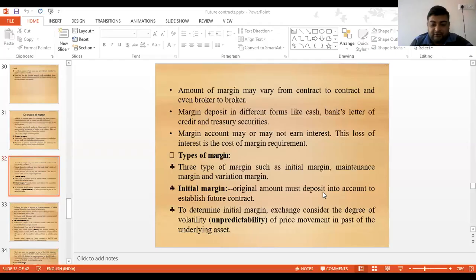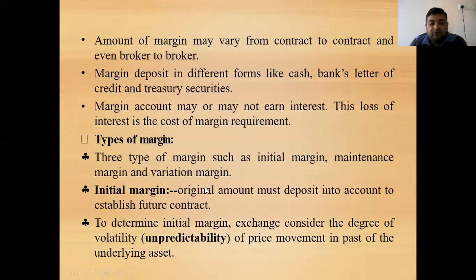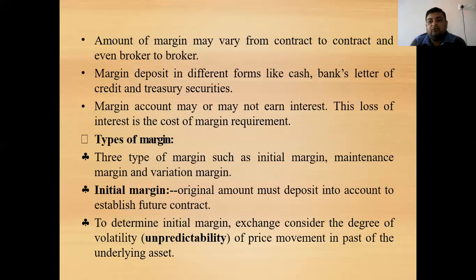We are discussing the types of margins required by the broker at the time of entering into a futures contract. The types of margins are the initial margin, maintenance margin, and the variation margin. We have already discussed the initial margin — the original margin that must be deposited into an account to establish the futures contract.